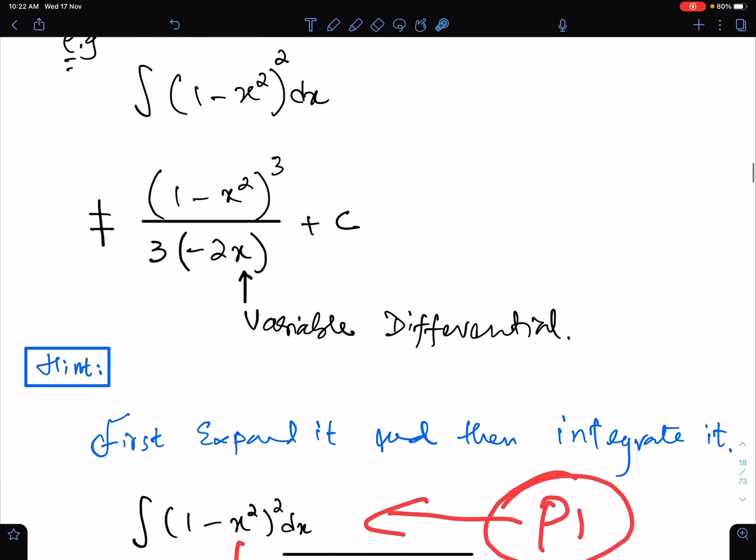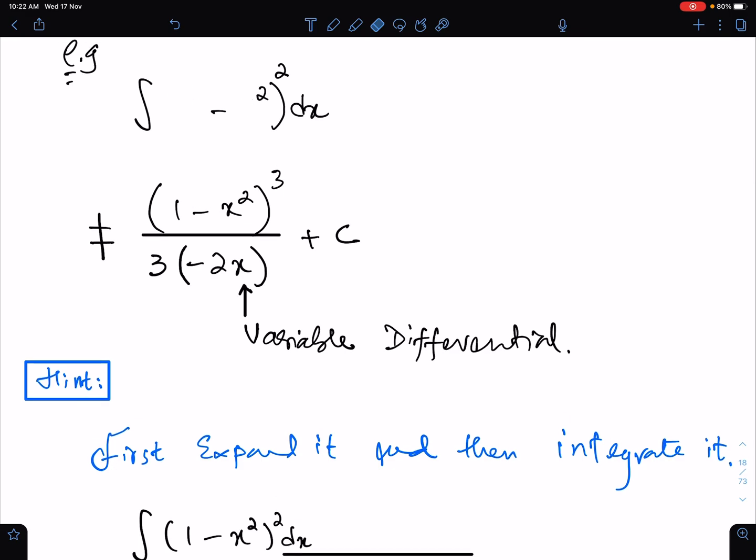Because when function is non-linear, then we always get variable differential. This function is non-linear, so the differential is minus 2x.